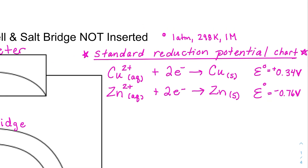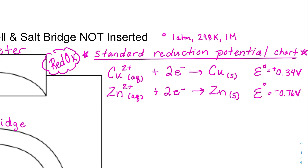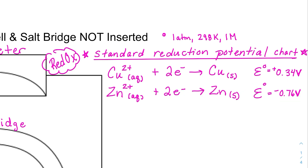For a redox reaction I need both a reduction and an oxidation, but right now both half reactions are written as reductions. So the first thing I have to decide — before even building the cell — is which one to reverse to get a positive overall voltage. I'll pick the one with the biggest negative voltage and reverse it to make it the oxidation.